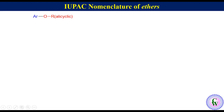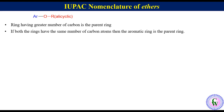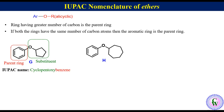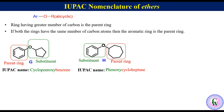In aryl-cycloalkyl or aryl-cycloalkyl ethers, the ring having the greater number of carbon atoms is the parent chain. If both rings have the same number of carbon atoms, then the aromatic ring is the parent ring. For compound G, the benzene ring with the greater number of carbons is the parent ring, while the cyclopentoxy group acts as a substituent, giving the IUPAC name cyclopentoxybenzene. For compound H, the cycloheptyl group with the greater number of carbons acts as the parent ring while the phenoxy group acts as a substituent, giving the IUPAC name phenoxycycloheptane.